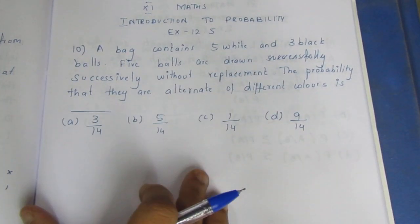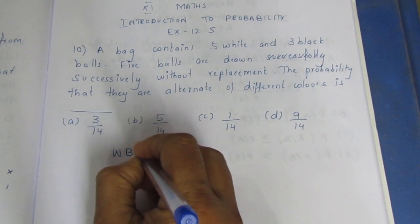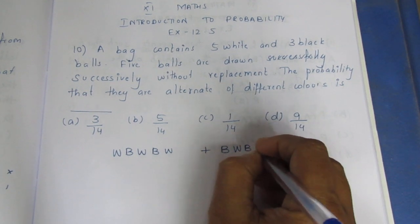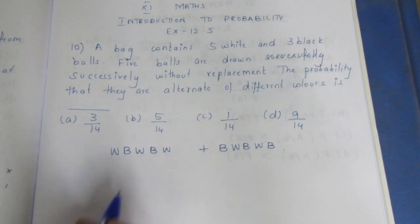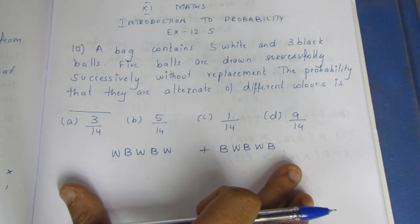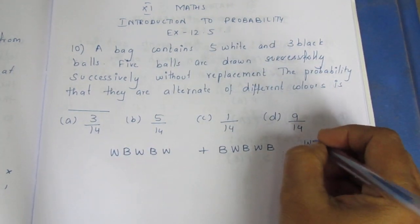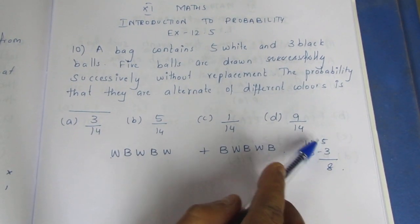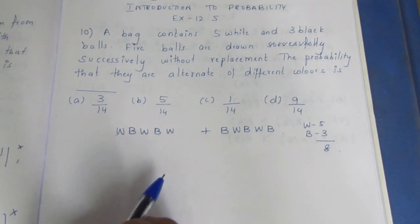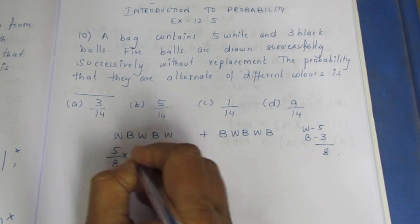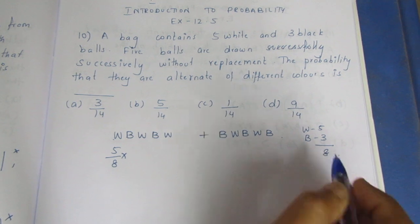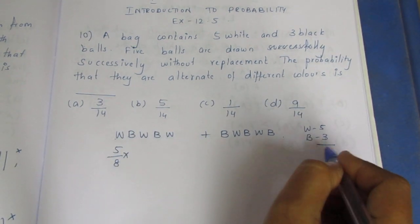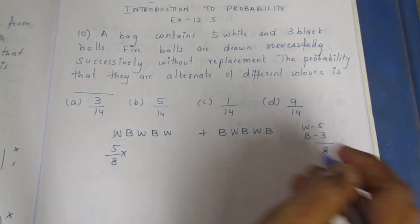There are two possibilities: first ball is white followed by black, or first ball is black followed by white, alternating. One ball less means one less white ball, then one less in the total count.